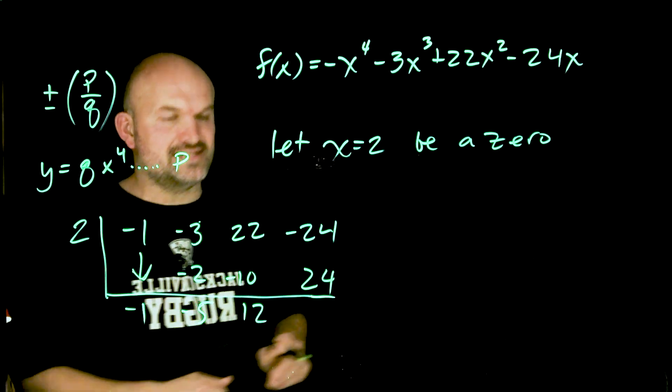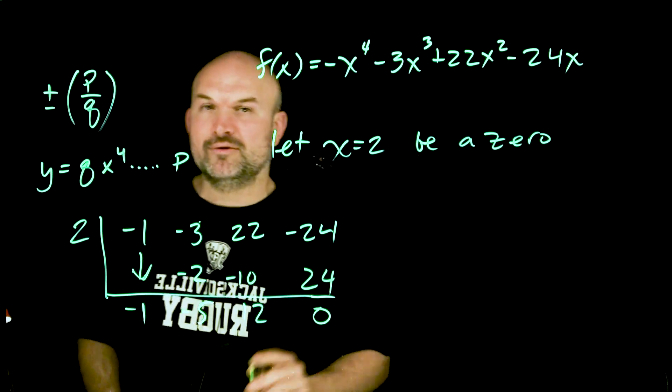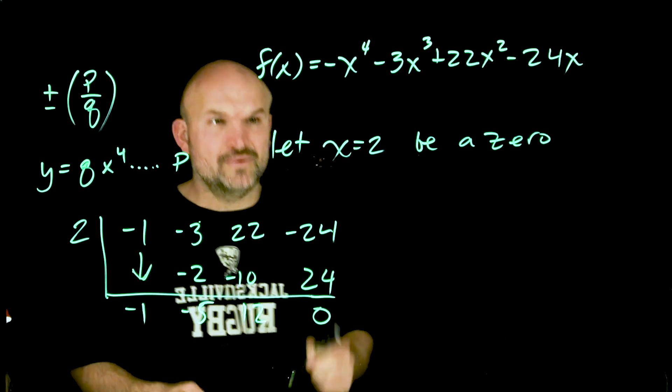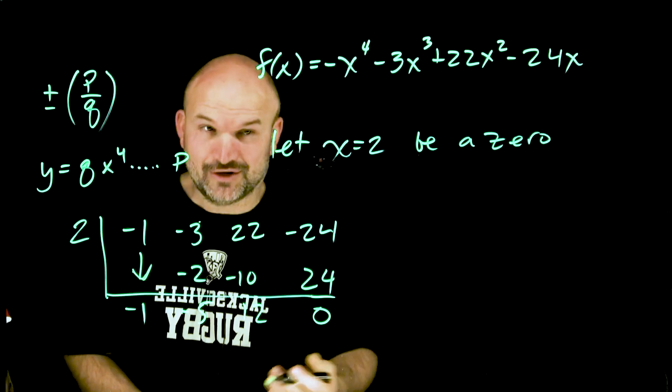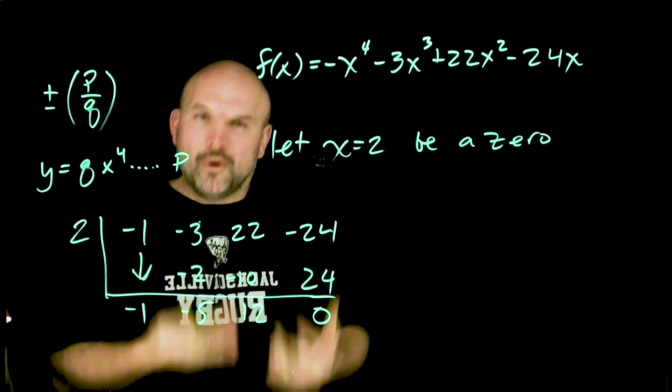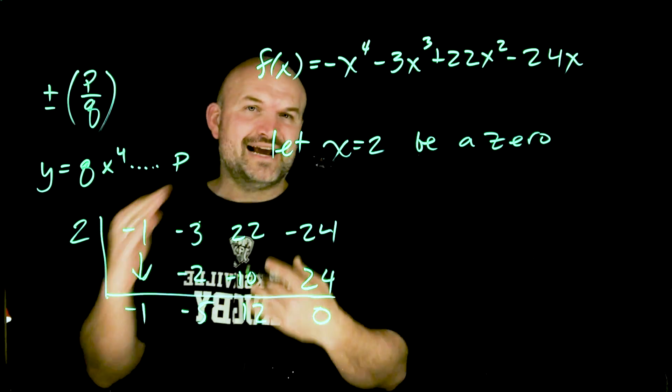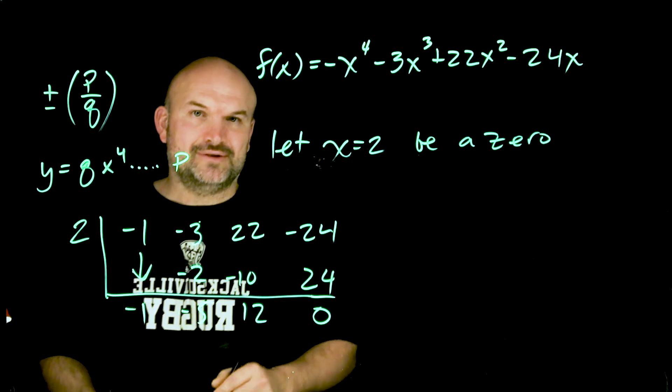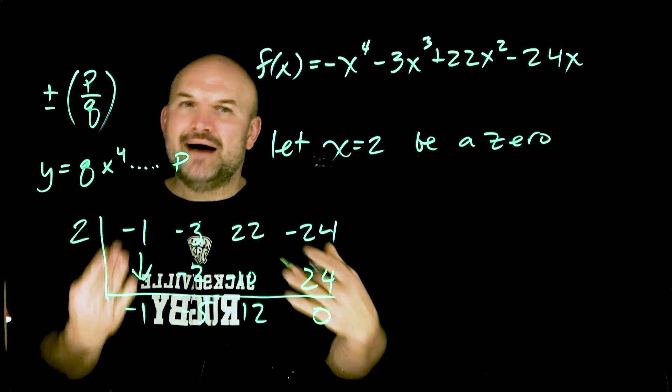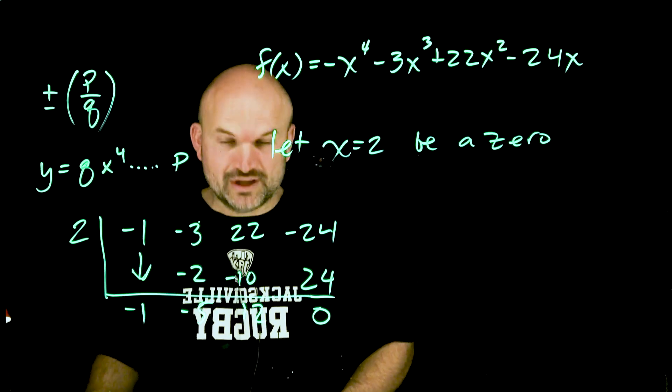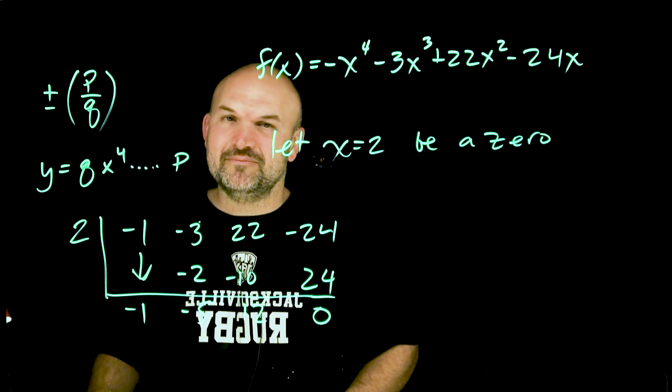If it says x is a zero then you have to have a remainder of zero via division. If you do not get zero, then either x equals two is not a zero, your teacher or your test lied to you, or more likely you made a mistake. Notice how when I did synthetic division I said everything out loud. I could do this much quicker in my head, but how many times have I made mistakes doing that really quickly and not saying the things in my head? More times than I can probably count.